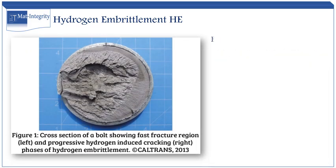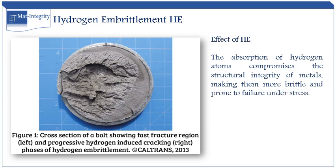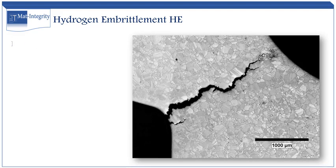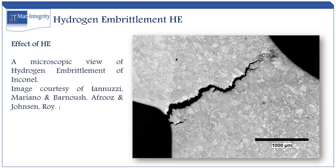making them more brittle and prone to failure under stress, even at levels well below their usual yield strength. This vulnerability poses a risk to the reliability and safety of critical components and structures across various industries. Understanding hydrogen embrittlement is paramount in ensuring the durability and performance of industrial materials. Its occurrence highlights the need for stringent preventive measures and material selection to mitigate its detrimental effects.